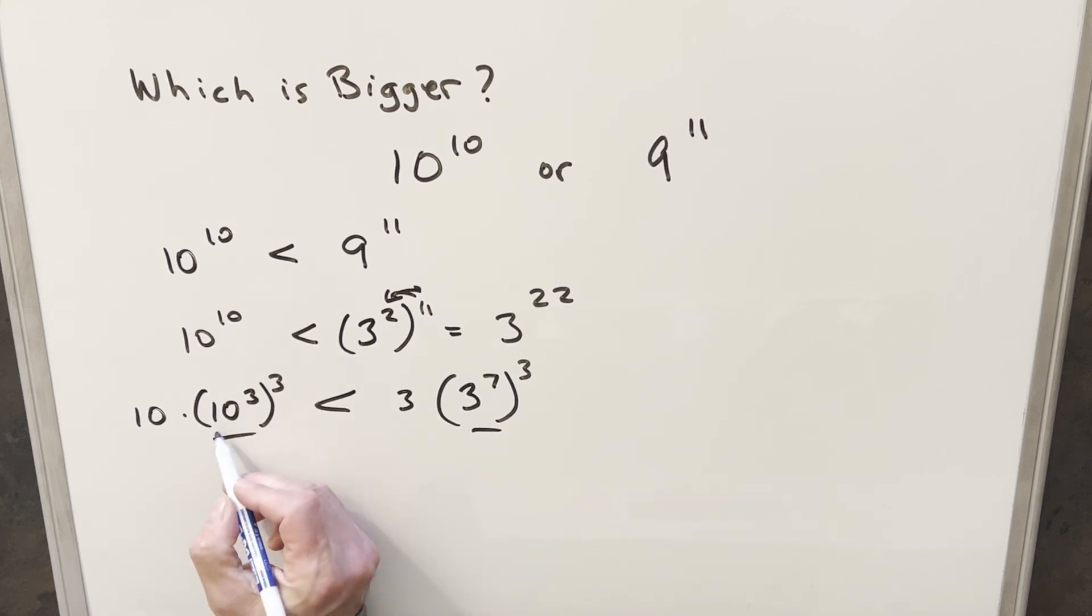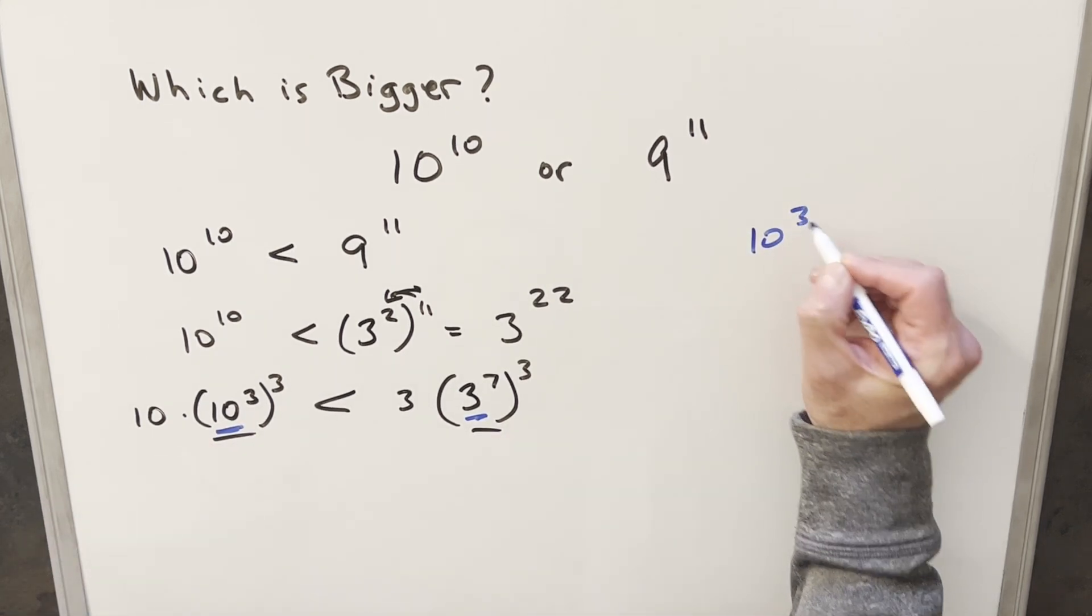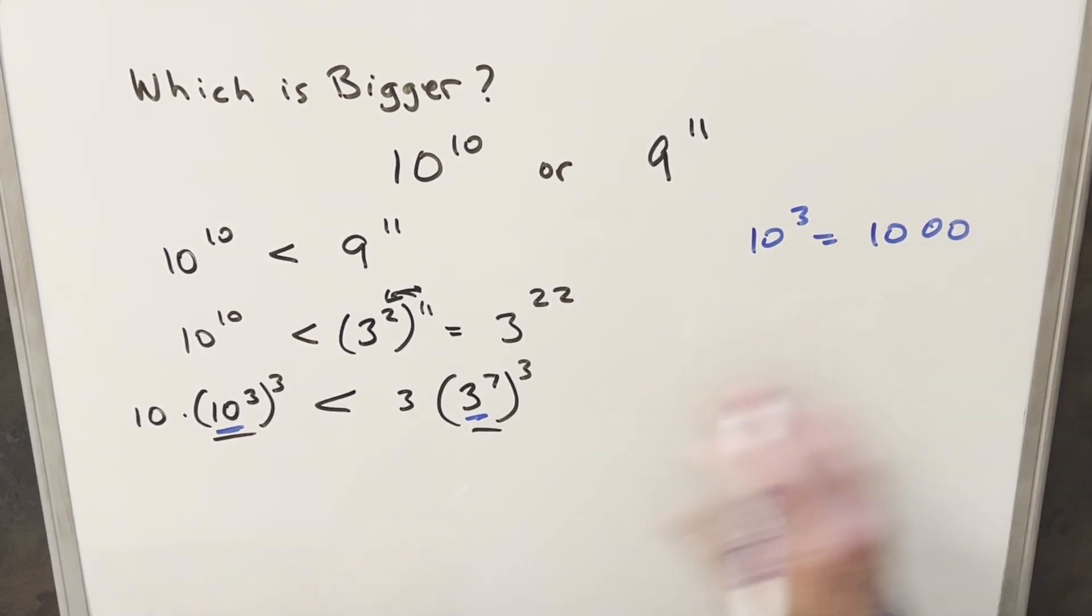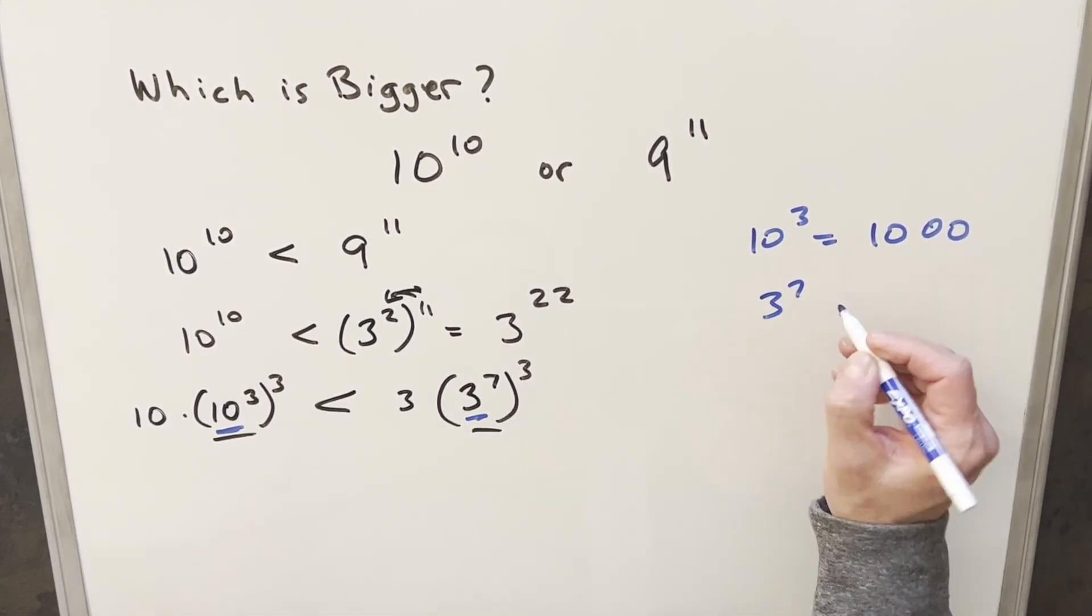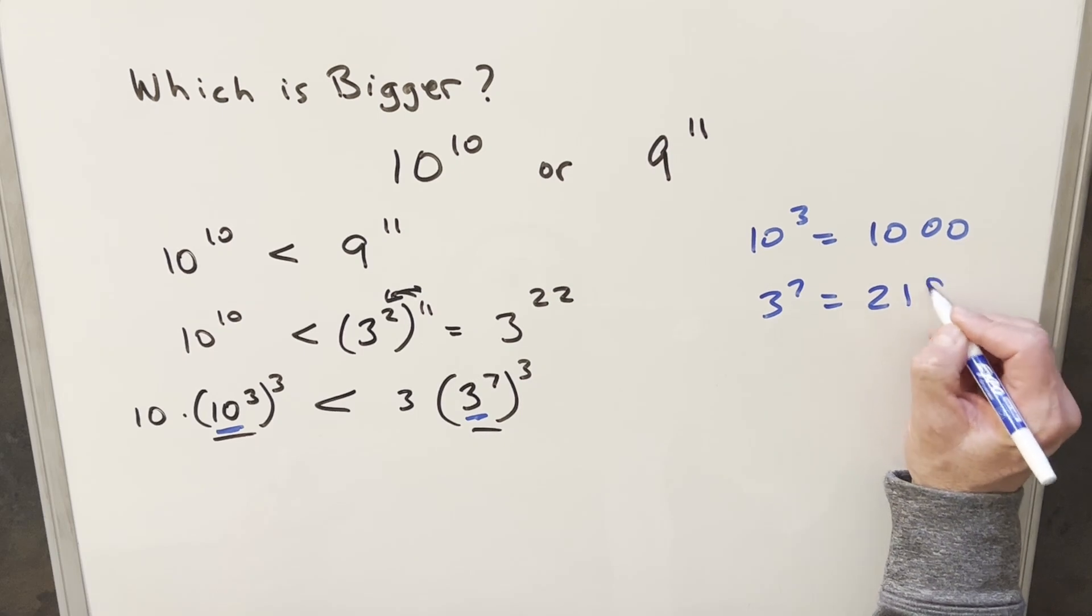And then from here what I want to do is just use the fact that we know this value, we know this value. 10 cubed is really easy, that's just going to be 1,000. And then for 3 to the 7th, I'm going to use the fact that I know that this value is actually 2187.